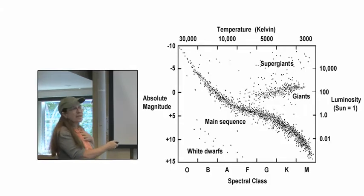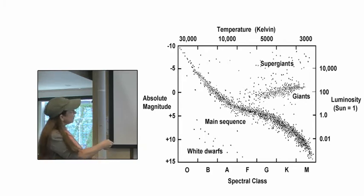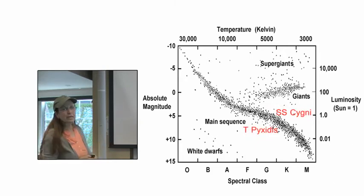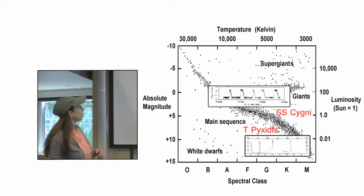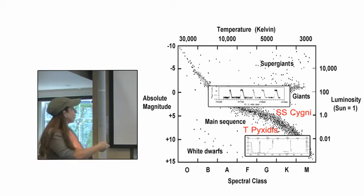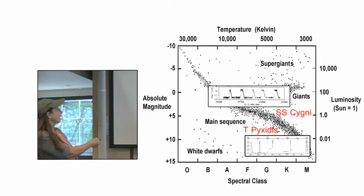SS Cygni and T Pyxidis are low-mass main-sequence stars, so they would be plotted around here, somewhere in here on the H-R diagram. This is the light curve that they produce. This is SS Cygni and T Pyxidis. Remember that those light curves are being produced by material dropping onto the surface of a white dwarf. The white dwarf is located down here on the H-R diagram.